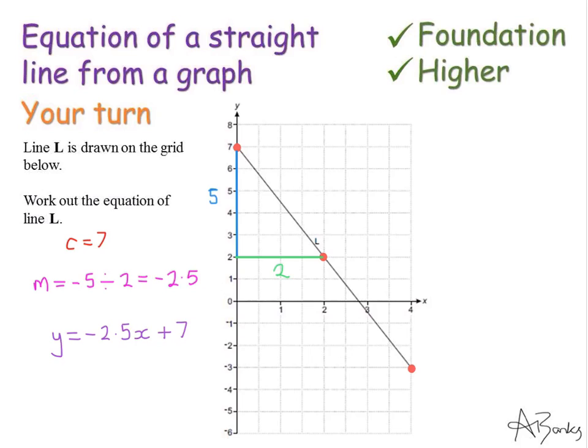So my gradient is 5 divided by 2. So I get a decimal gradient. And not only that, but we have to remember that the line is sloping downwards. So it's a negative gradient as well. So the final answer to this question is y equals minus 2.5x plus 7. So this is a trickier example. Thank you for watching.